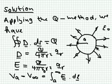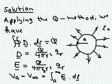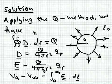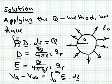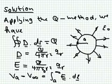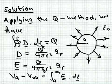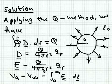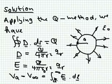We use the Q method. Because of symmetry, we assume charge Q is uniformly distributed on the conducting sphere. The electric field is radial, so D is a function of r in the r-direction. Applying Gauss's law: the integral of D dot dS equals Q. Since D is constant, we pull it out; the integral of dS gives 4 pi r squared. Therefore D equals Q over 4 pi r squared in the r-direction.